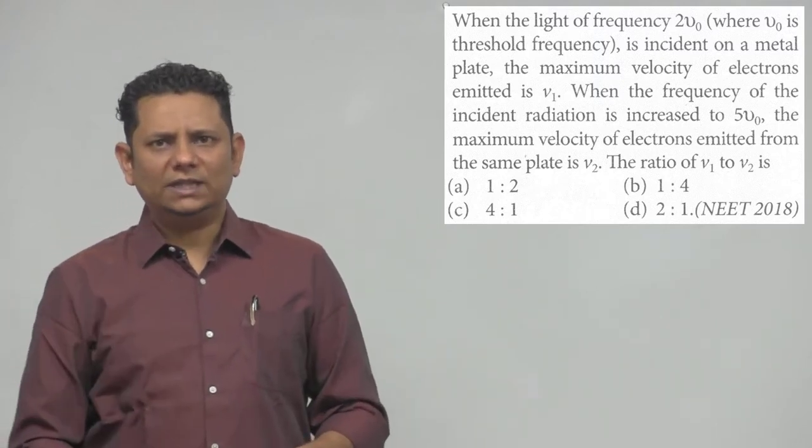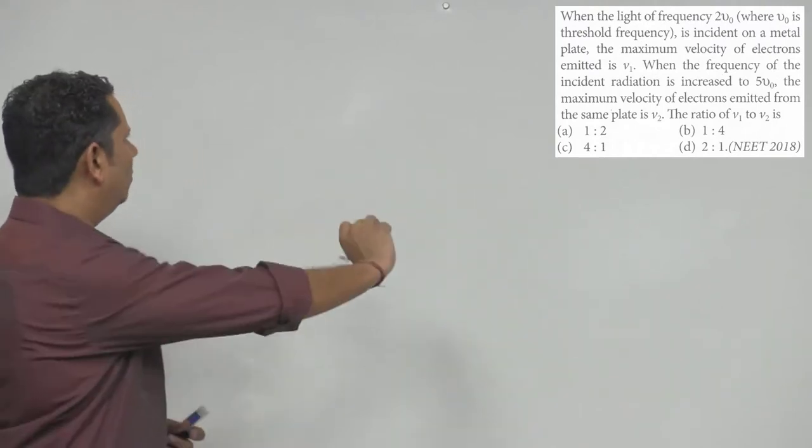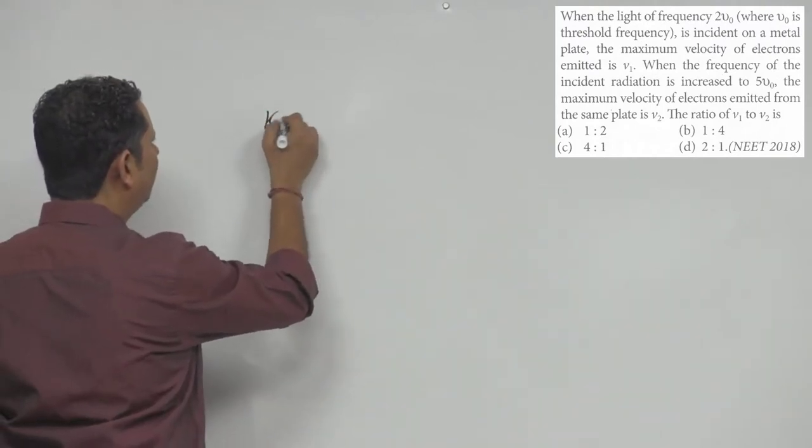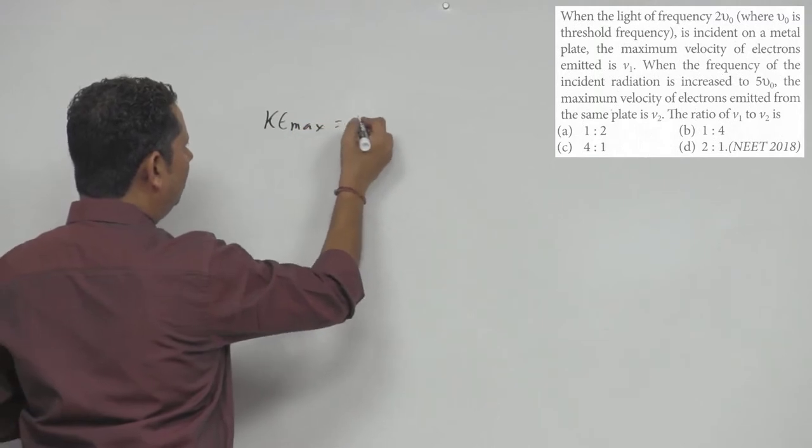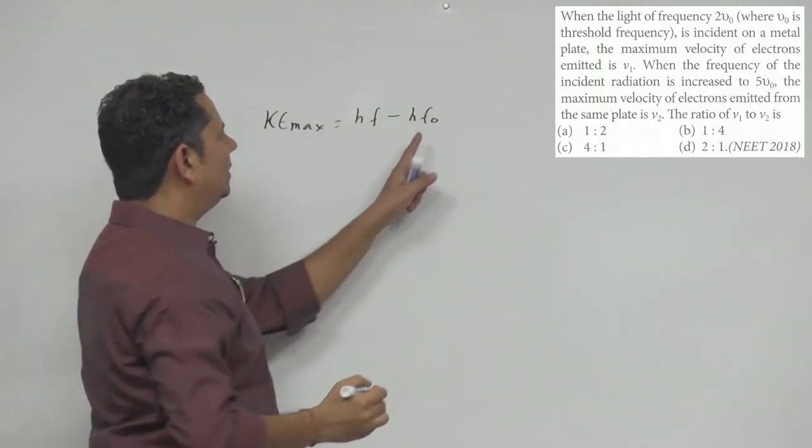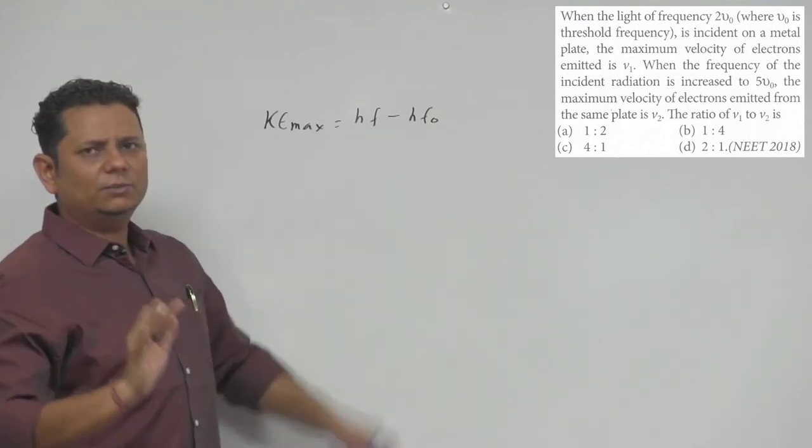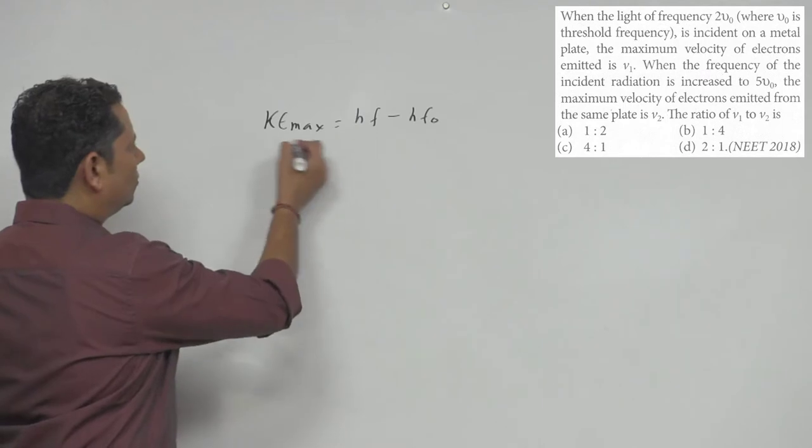So the question uses Einstein's famous equation. We write that kinetic energy maximum will be equal to hF minus hF₀. Here I'm deliberately using F so we don't get confused between ν₀ and V symbols.